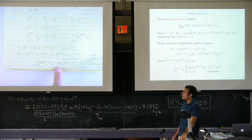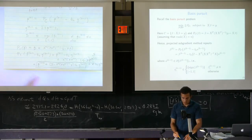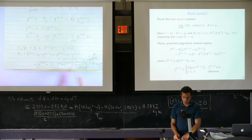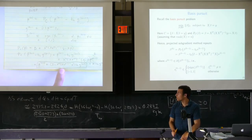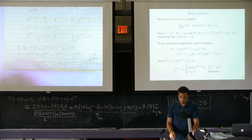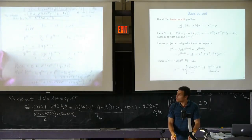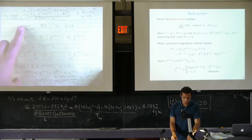To implement this, computing the subgradient is trivial—just evaluate the sign. But the projection requires solving a linear system in X, which can be expensive if X is large. Regardless, we now have an algorithm for solving the basis pursuit problem.